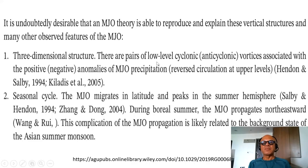There are pairs of low-level cyclonic vortices associated with positive anomalies and anti-cyclonic vortices associated with negative anomalies of MJO precipitation. So you have reversed circulation at the upper levels, convergence and divergence, cyclonic, anti-cyclonic, or in the dry phase you have divergence, anti-cyclonic, and convergence and cyclonic vortices. The seasonal cycle, obviously, MJO is very much phase locked to the season.